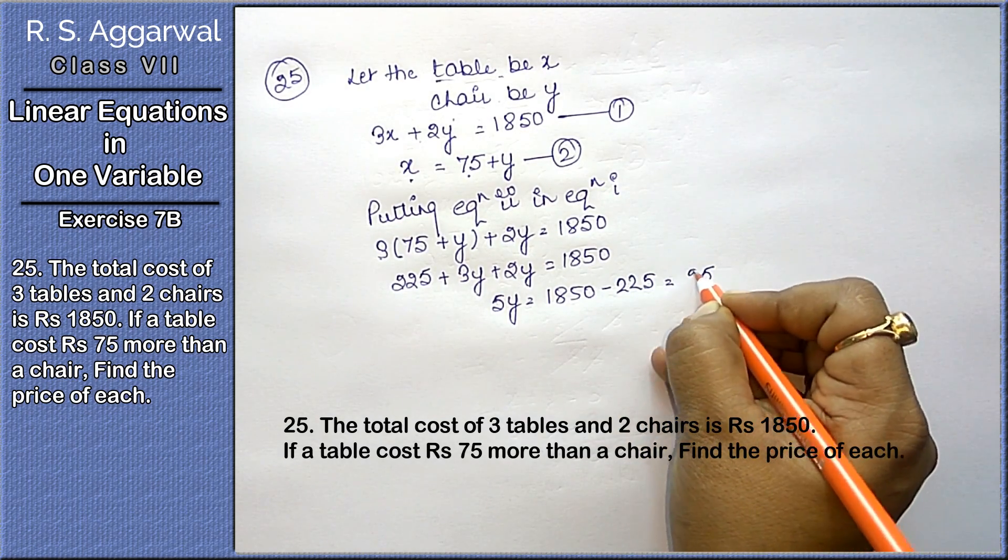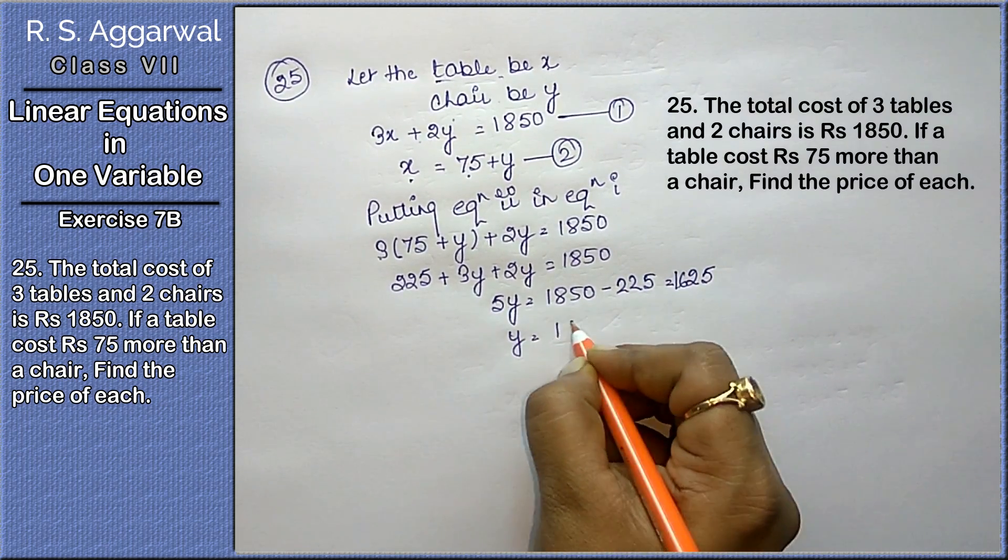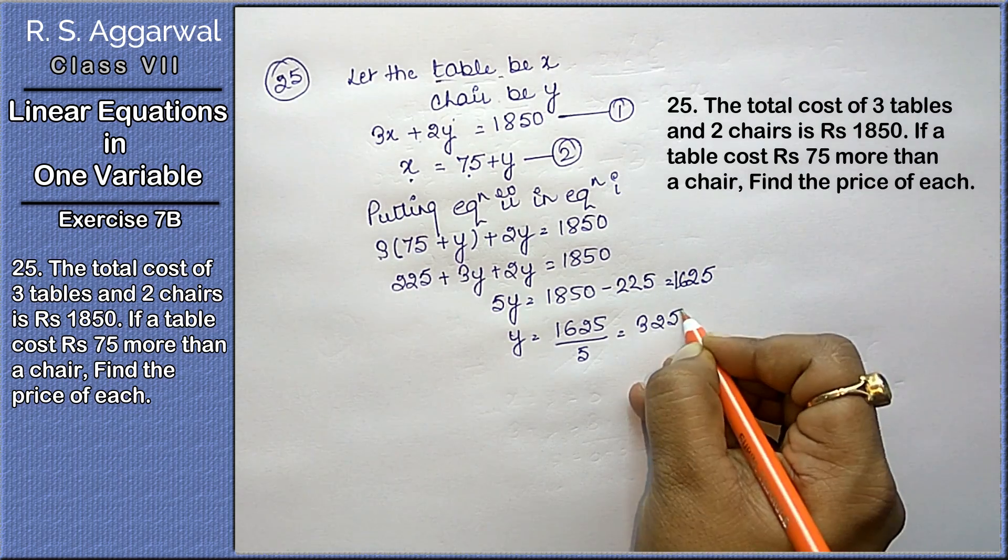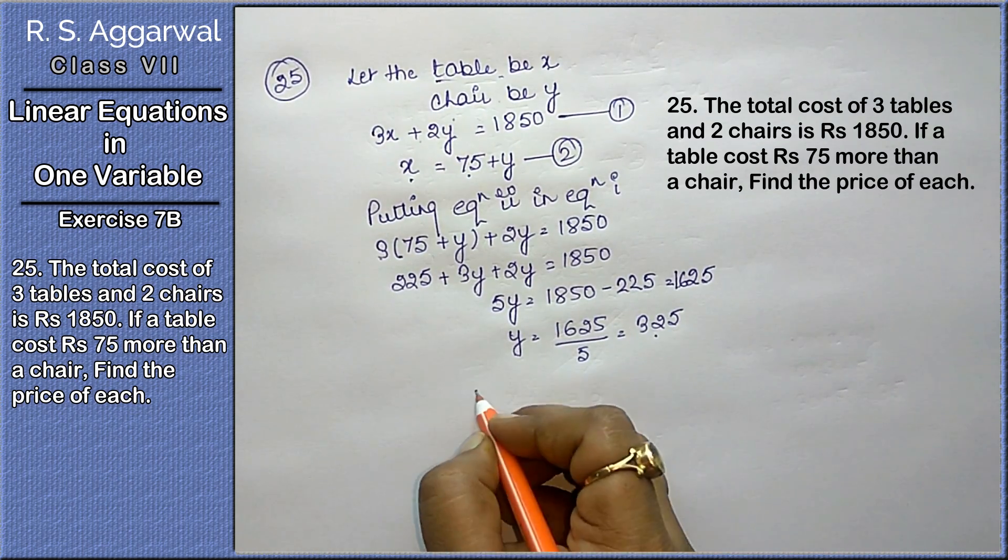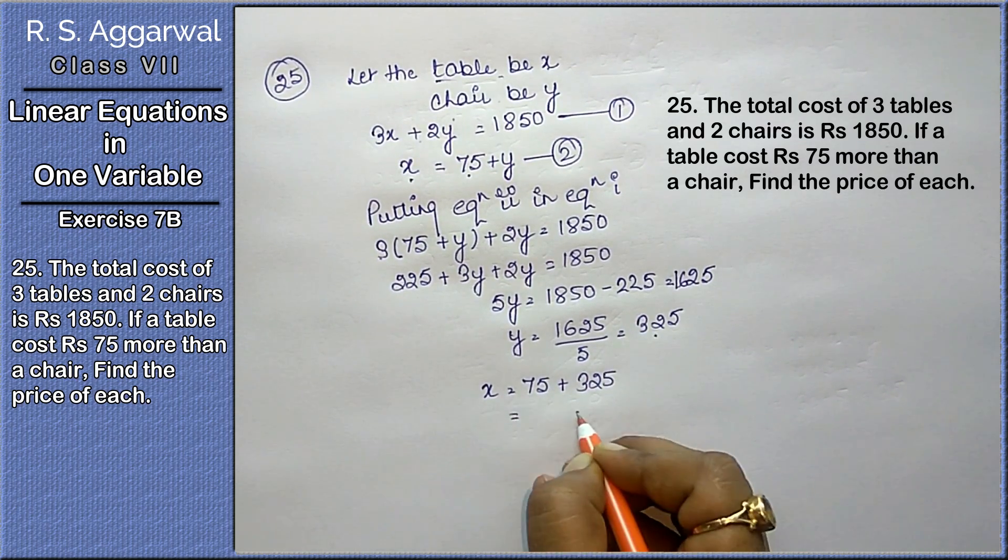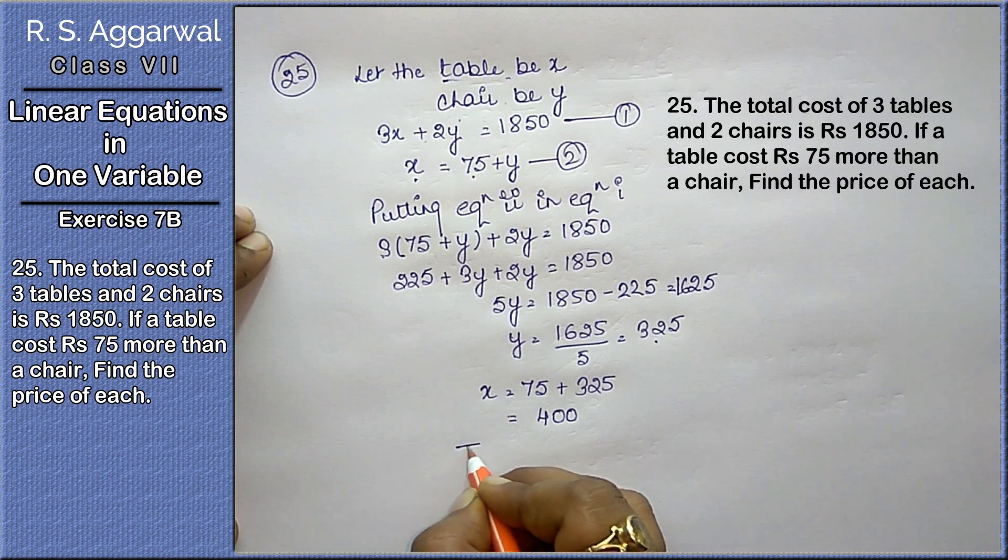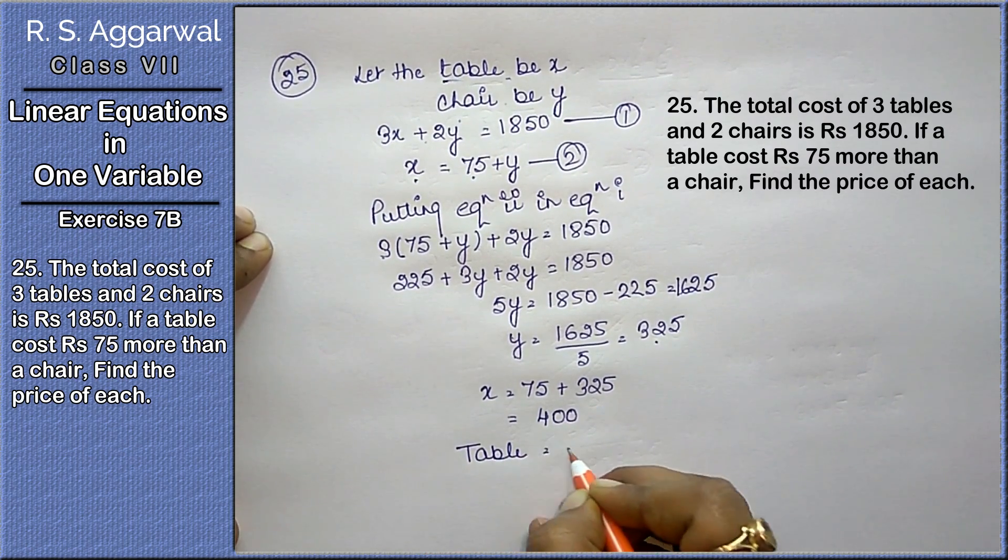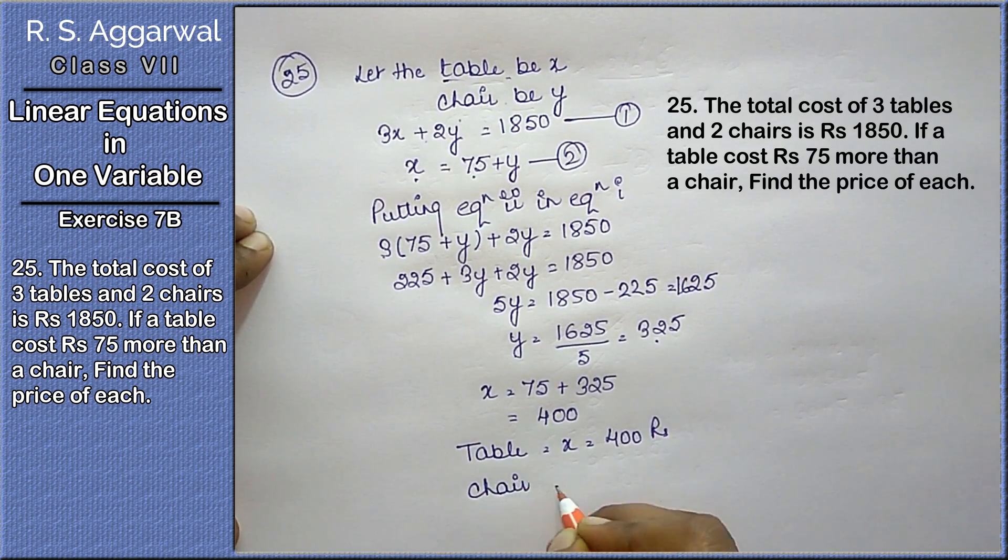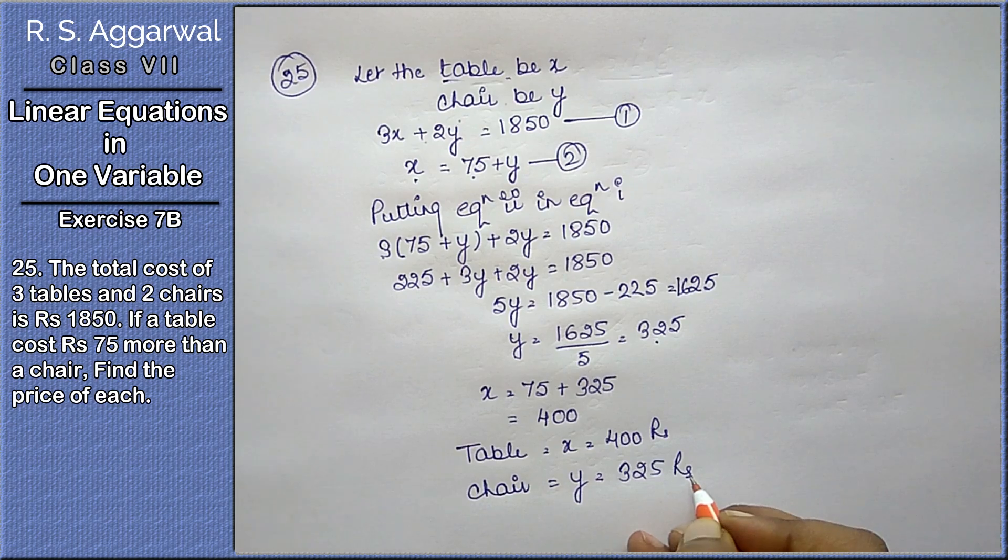18 minus 2 is 16, so y equals 1625 divided by 5. That gives y equals 325. Now x equals 75 plus 325, that means x equals 400. That means the table costs 400 rupees and the chair costs 325 rupees. Let's do the next part.